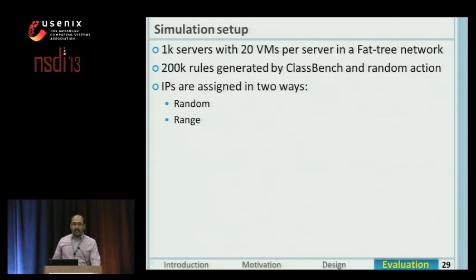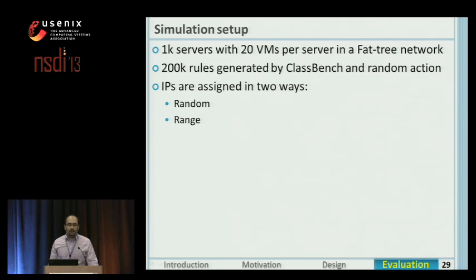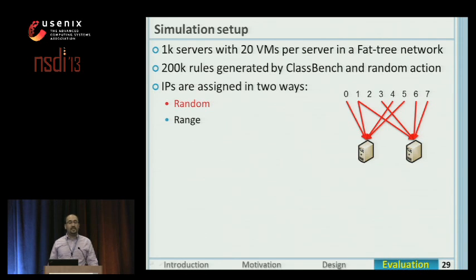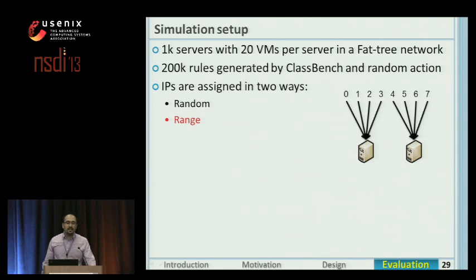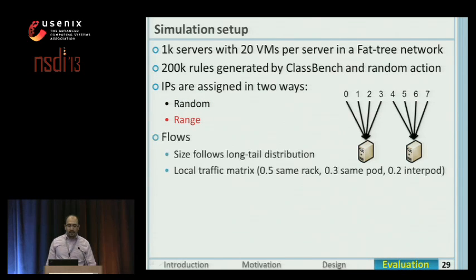In the simulation, we had 1,000 servers in a fat-tree network and generated 200K rules using the ClassBench rule generator. We have two ways of IP assignment: random, which assigns IPs randomly to VMs on servers, and range, which assigns a range of IPs to VMs on each server. Flow sizes follow a long-tail distribution based on previous measurement papers, and they follow a local traffic matrix by default.